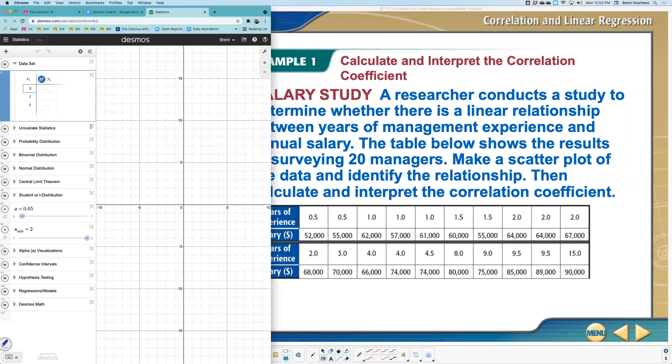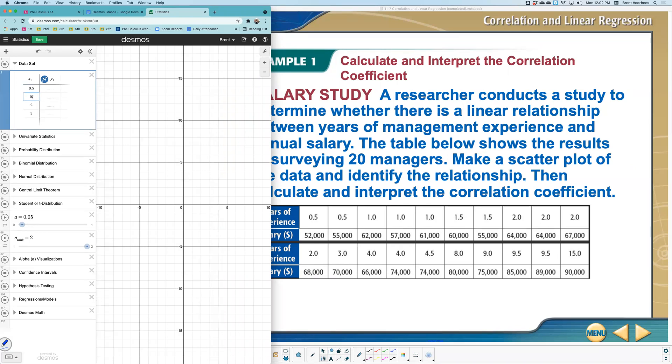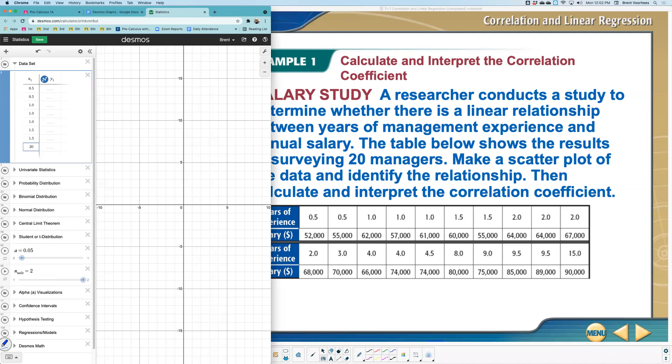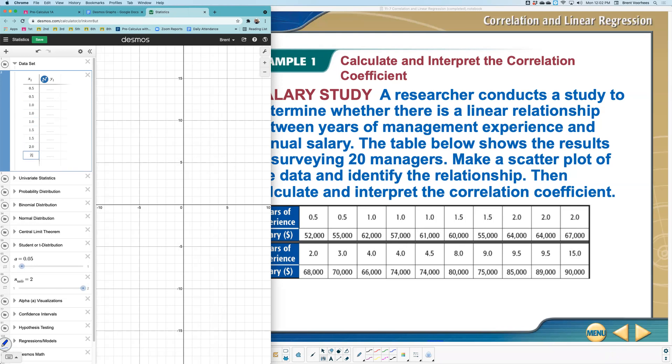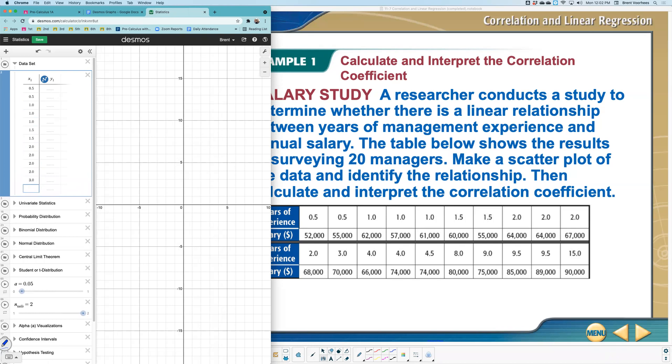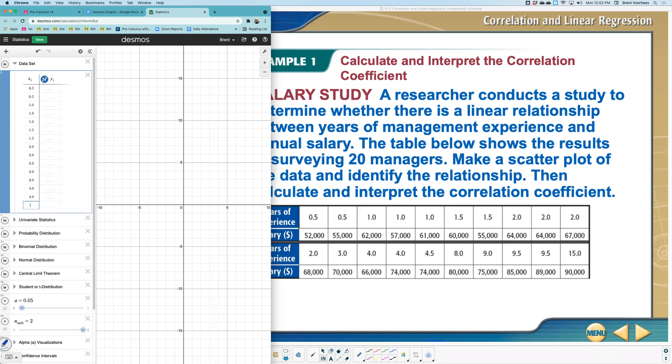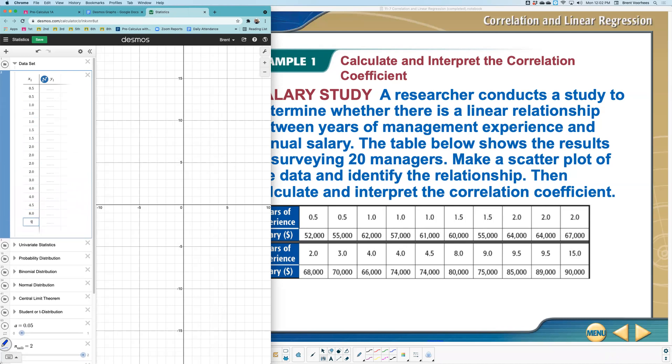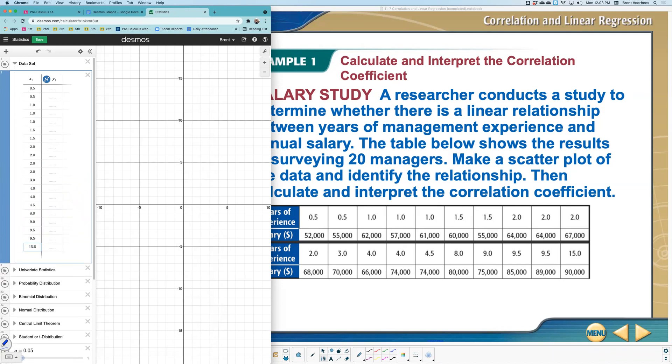What we're going to do is come over to our data set, and I'm going to type in the years of experience and it's X. So we have 0.5, 0.5, 1.0, 1.0, 1.0, 1.5, 1.5, 2.0, 2.0, 2.0, another 2.0. So it looks like four of those, 3.0, 4.0. By the way, you don't have to type in those .0s if you don't want to, but the .5s you would. And we'll find out in a second if I made a mistake or if I got these in correctly when I type in the Y value. So it should match the same length here.